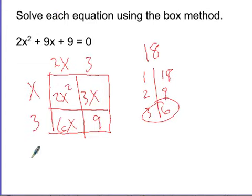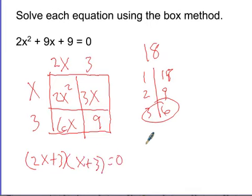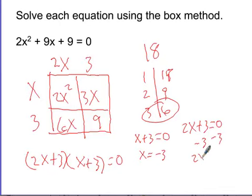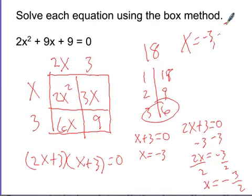So it's all positives, so they're going to be 2x plus 3 times x plus 3 equals 0. And then you set each factor to 0. So x plus 3 equals 0, so x is negative 3, and then you have 2x plus 3 equals 0. So 2x equals negative 3, so divide by 2, and x is negative 3 halves. So your solutions are x equals negative 3 comma negative 3 halves.